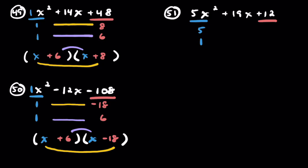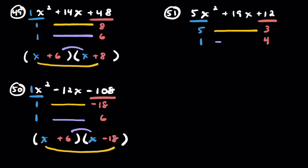For problem 51 with a leading coefficient of 5 and constant 12, you can't just think of two numbers that multiply to 12 and add to 19 — the 5 plays a role now. For 12: options are 1 and 12, 2 and 6, 3 and 4. Going across with 3 and 4: 3 times 5 is 15, and 1 times 4 is 4 — 15 plus 4 does get 19. So the factoring works on the first try. But if you choose numbers that don't work, it's quick to try again with new numbers. Once the leading coefficient changes, it really does matter how you pair them up.